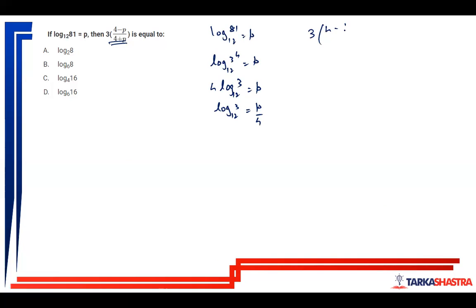This 3 into 4 minus P upon 4 plus P can be written as 3 into 4 minus P upon 4 upon 4 plus P upon 4, which is 3 into 1 minus P by 4 upon 1 plus P by 4.